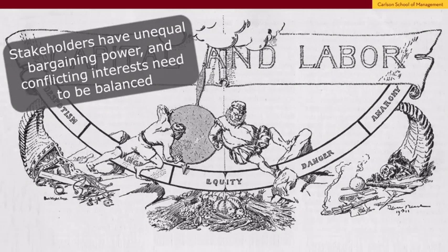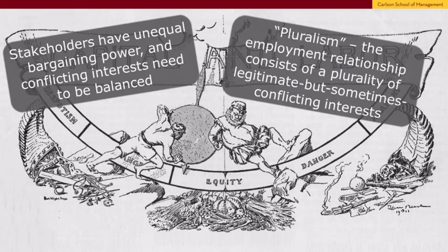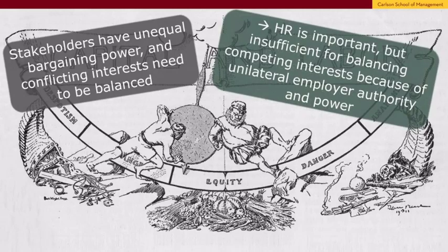This school represents an idea of the employment relationship where stakeholders have unequal bargaining power, they have some conflicting interests, and it is bad for them and bad for society for one side's interests to dominate. Those interests instead need to be balanced. This is a pluralist employment relationship where the employment relationship consists of a plurality of interests that are all seen as legitimate. From a pluralist perspective, human resources is important, especially for issues where there isn't a conflict of interest. However, this school is uncomfortable relying solely on HR because there are competing interests — so you need institutional checks and balances like laws and the labor movement.